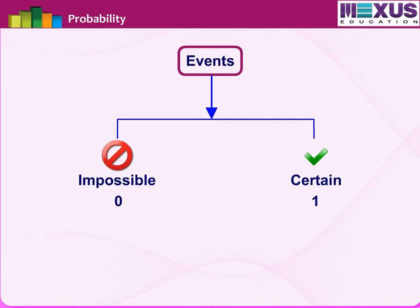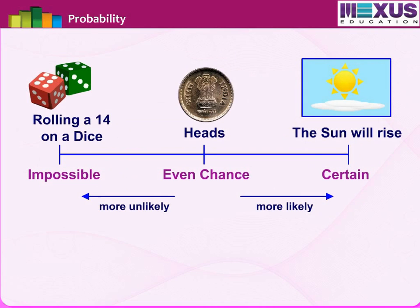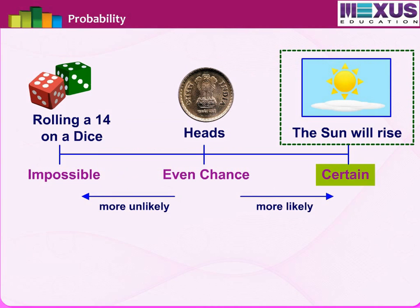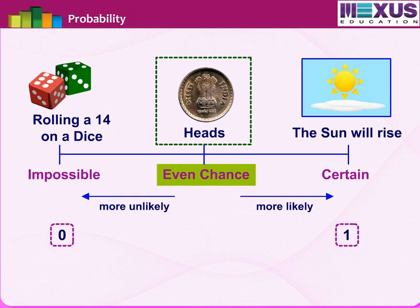Events that have many possibilities can have a probability between 0 and 1. Those which have no chance of happening have probability 0, and those that are bound to happen have probability 1. On the probability scale, an event such as the sun rising is certain, so its probability is 1. Rolling a 14 on a dice is impossible, so its probability is 0. Getting heads on a toss is an even-chance event, so its probability is one-half.